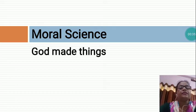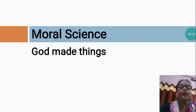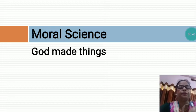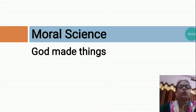Things that are made by God, we say God Made Things. Natural things like Sun and Moon. Have you seen the Sun in the sky? Sun is made by God.